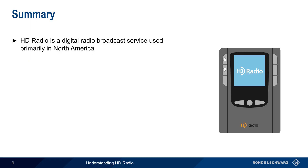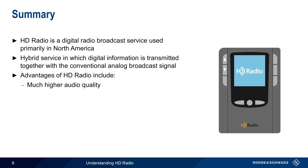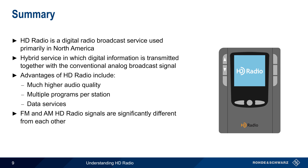Let's end with a brief summary. HD radio is a digital radio broadcast service used primarily in North America, with thousands of channels currently on the air, the vast majority of which are FM stations. Unlike most other digital radio technologies, HD radio is a hybrid service in which the digital signals are transmitted together with the conventional analog broadcast signals. HD radio delivers significant advantages over traditional broadcast radio, including much higher audio quality, multiple programs or channels per station, and data and emergency alert services. Note, however, that FM and AM HD radio signals are significantly different from each other. Testing HD radios, either during development or during production, is most often performed using vector signal generators to create a wide variety of both AM and FM test signals.